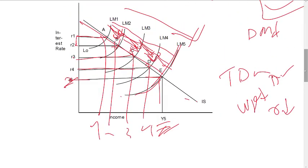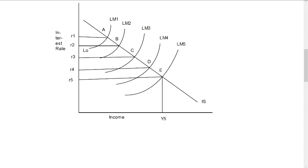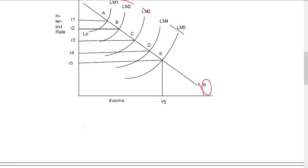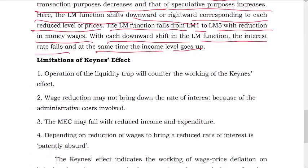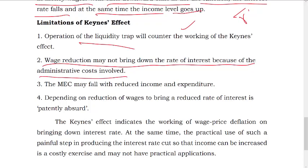Now let's explain the IS-LM in this context. The limitations include the liquidity trap — the liquidity trap will not allow the wage reduction to work. Wage reduction may not bring down the rate of interest because of administrative costing of wage reduction, so the mechanism will not work.